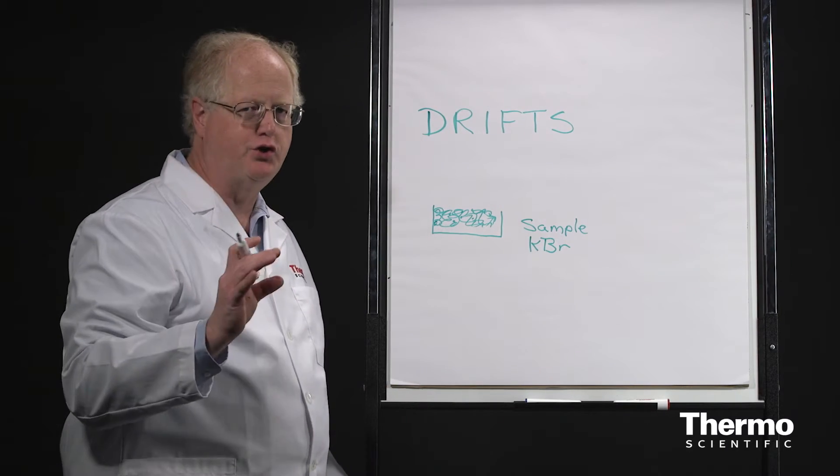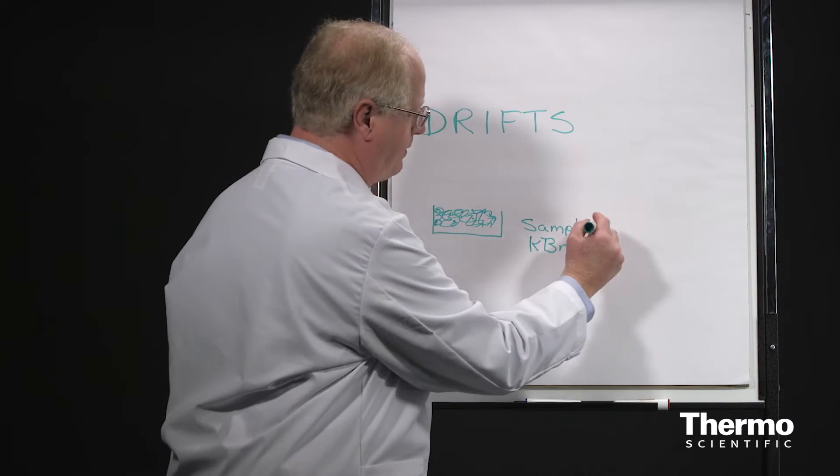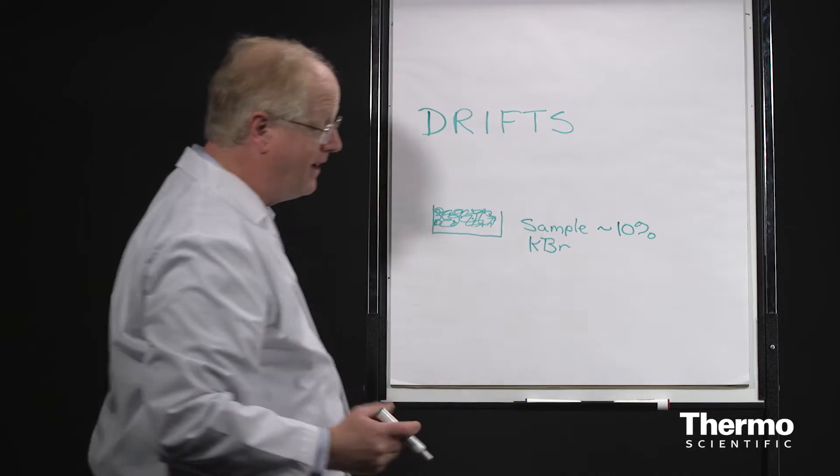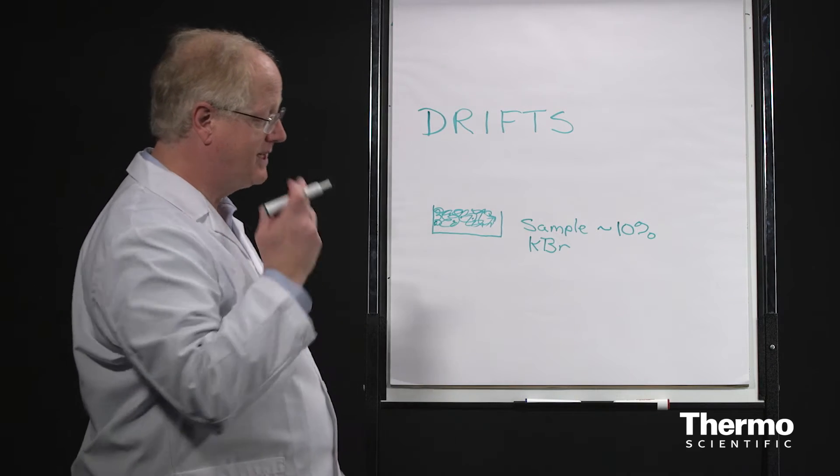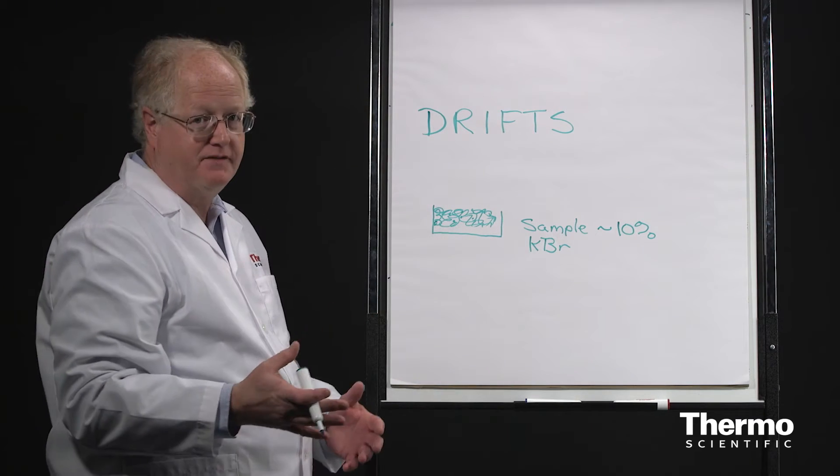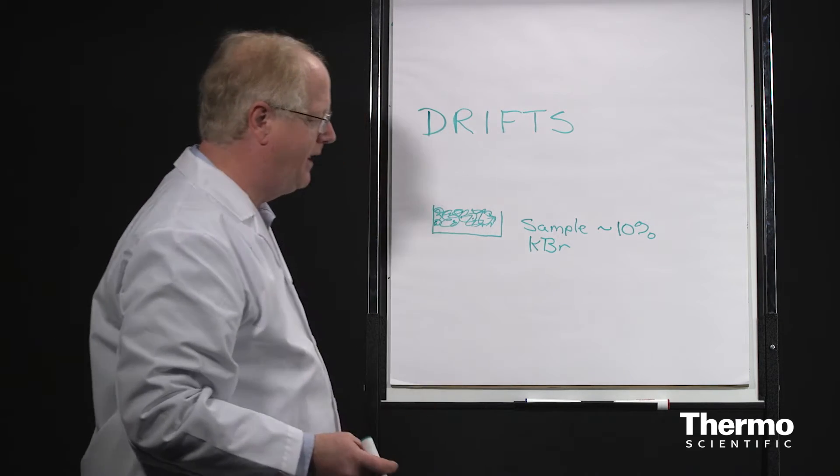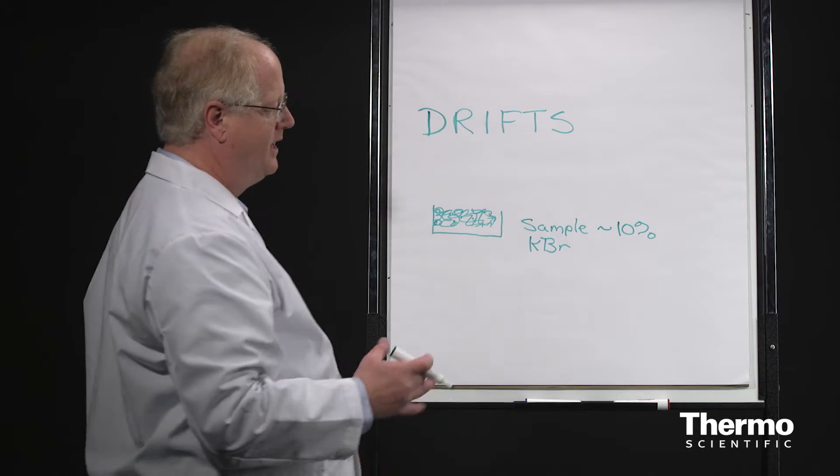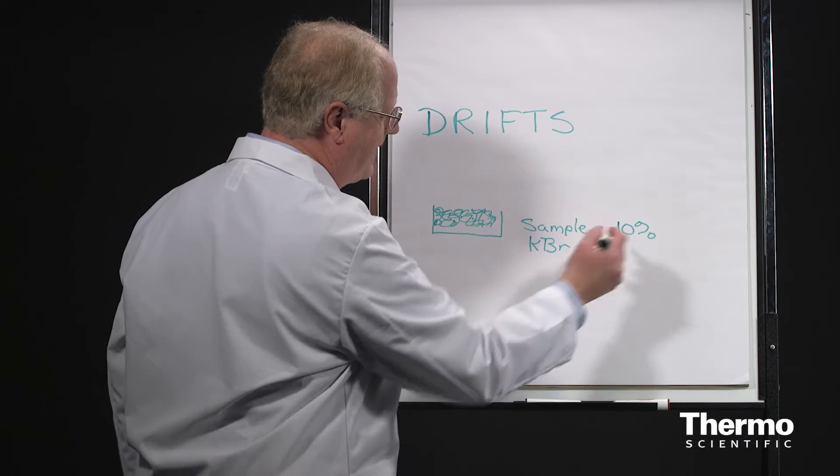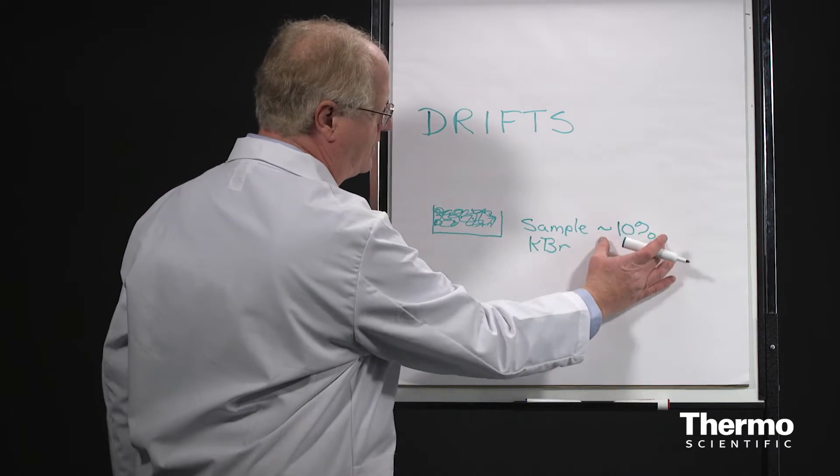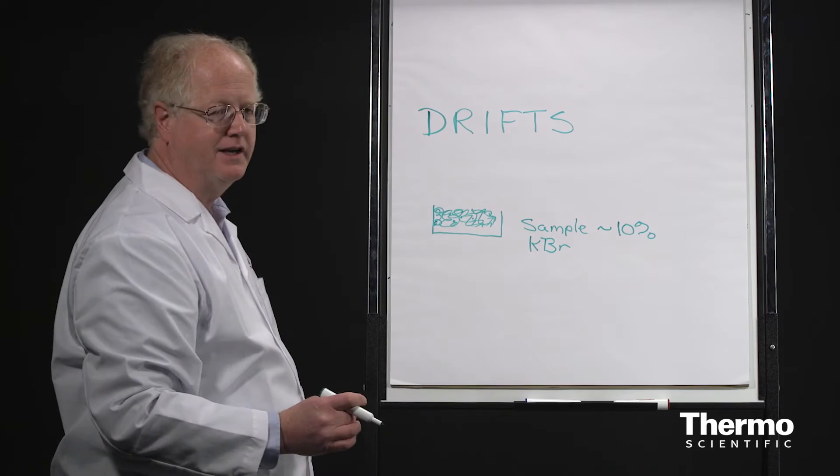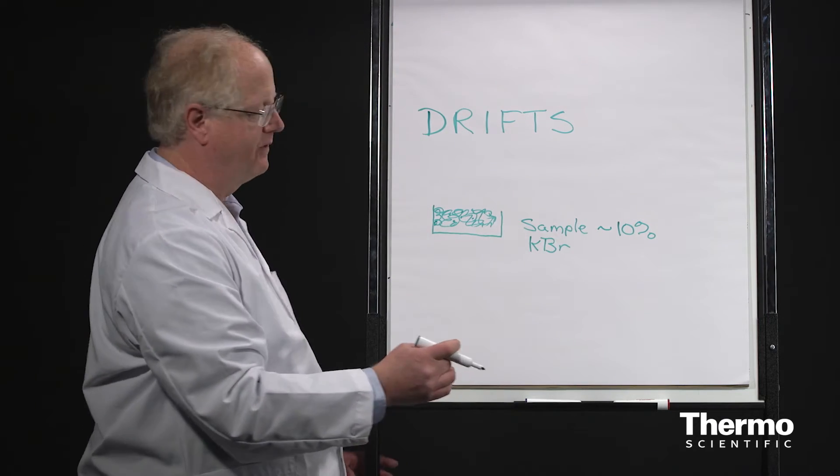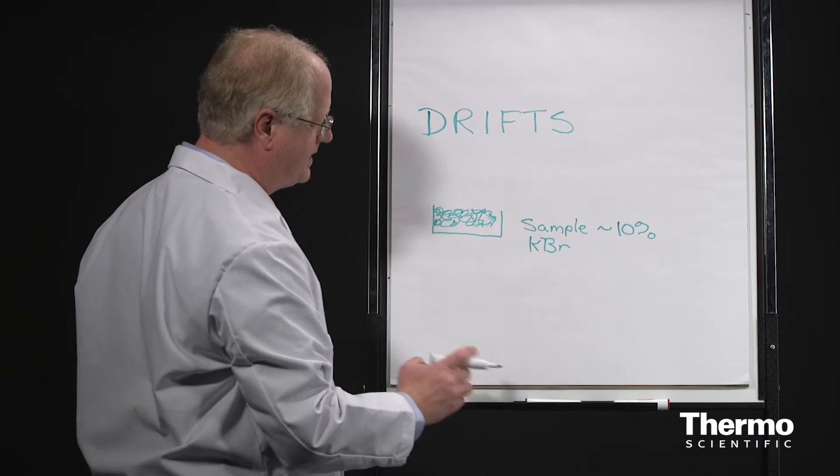Now, in order to get a good drift signal, you're going to want the sample to be around 10% or maybe even less. One mistake people make is they think a little bit of sample must be good, so more must be better. It isn't, because the sample will become totally absorbing. So you want the analyte to be not the main constituent. It's KBr powder. Sometimes we use diamond powder for various reasons, but KBr is easily the most common.